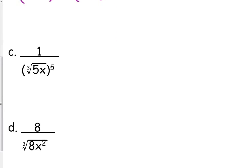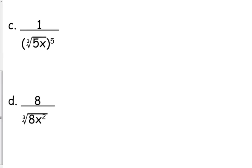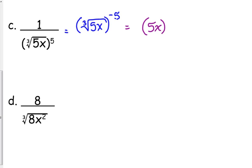Now let's look at some with fractions in them. First thing we're going to do is get those out of the denominator. Using properties of exponents, we can do that by changing the sign of the exponent. So that is equivalent to the cube root of 5X to the negative fifth. Then write it in exponential form — the entire expression was to the negative fifth power, so that's the power of our exponent.